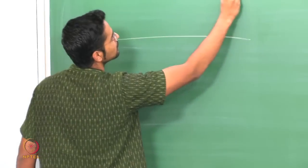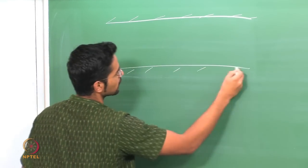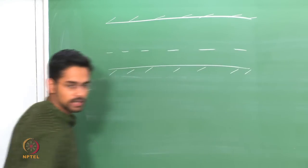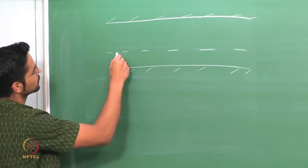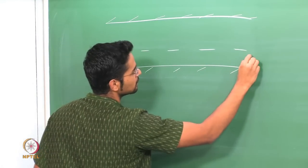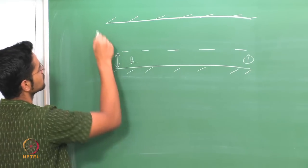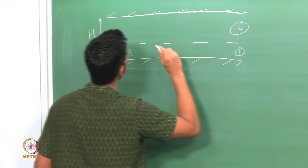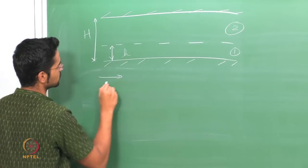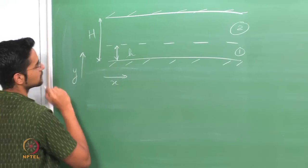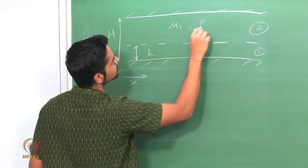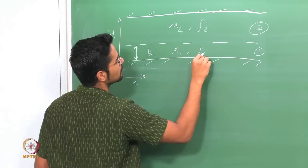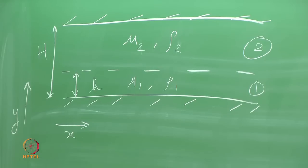In that system we had co-current flow in a microchannel, which we decided to model as flow between two infinite flat plates. The width of the bottom fluid, which I will call fluid 1, had a width h, the channel was capital H, and I had fluid 2 above it. The x direction was along the flow and y was perpendicular, and for generality both fluids have different physical properties.